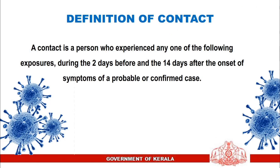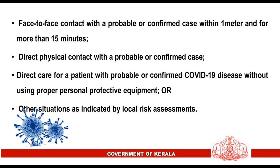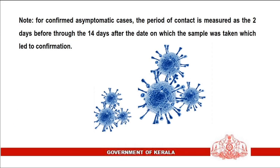Definition of contact. A contact is a person who experienced any one of the following exposures during the two days before and the 14 days after the onset of symptoms of a probable or confirmed case: face-to-face contact with a probable or confirmed case within one meter and for more than 15 minutes; direct physical contact with a probable or confirmed case; direct care for a patient with probable or confirmed COVID-19 disease without using proper personal protective equipment, or other situations as indicated by local risk assessments. For confirmed asymptomatic cases, the period of contact is measured as the two days before through the 14 days after the date on which the sample was taken which led to confirmation.